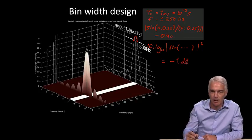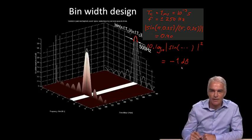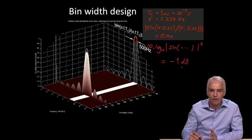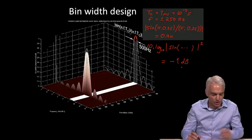You get these nice numbers. 0.9 of the magnitude comes down by 0.9, and that's 1 dB down. That's why 500 Hz is a nice bin width, because you lose, at worst, 1 dB.